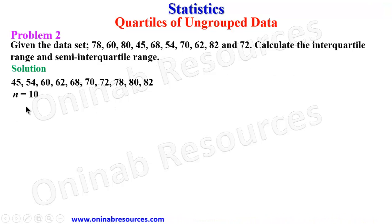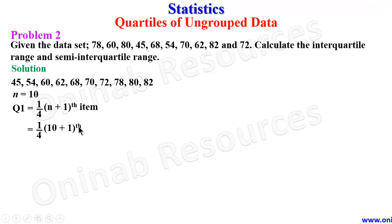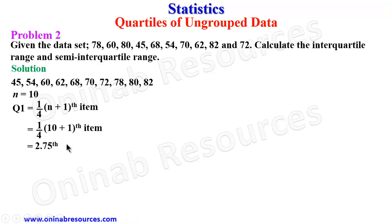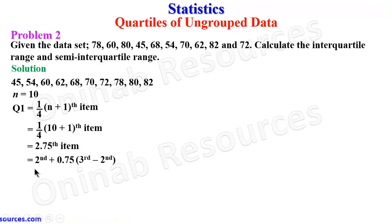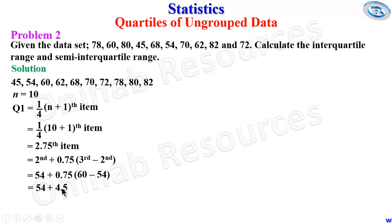For the interquartile range we need Q1 and Q3. For Q1: 1/4 × (n+1) = 1/4 × (10+1) = 11 ÷ 4 = 2.75 item. We split this as the 2nd item plus 0.75 × (3rd item − 2nd item). The 2nd item is 54, so: 54 + 0.75 × (60 − 54) = 54 + 0.75 × 6 = 54 + 4.5 = 58.5. Therefore Q1 = 58.5.